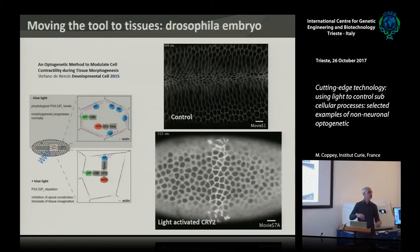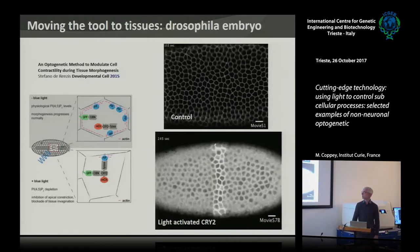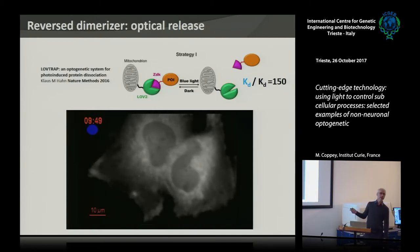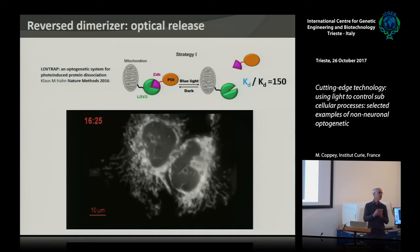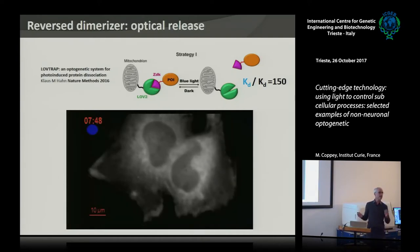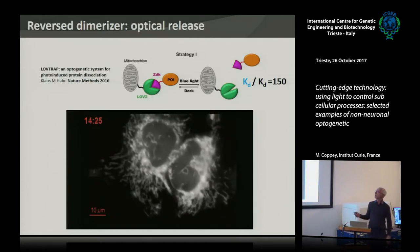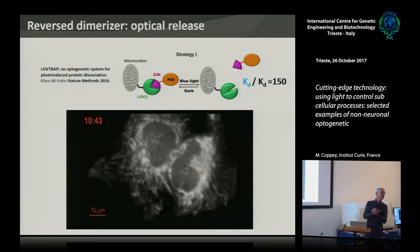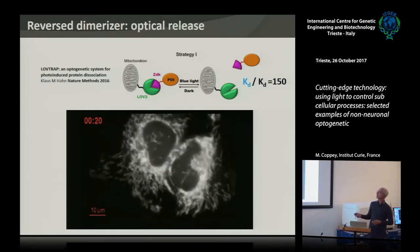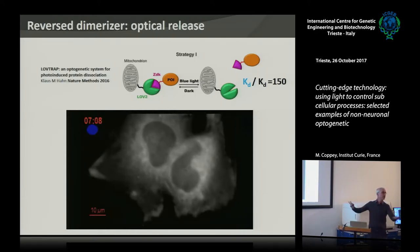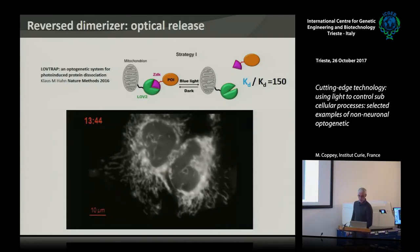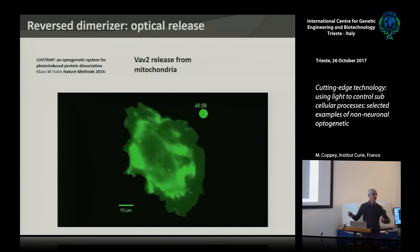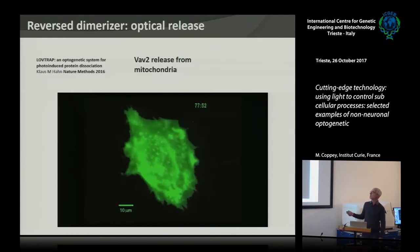Another recent development is the reverse ZDK system, where shining light causes dissociation of the dimer rather than association. This is a very important way to release a protein into the cytosol at a very precise moment. You can use the mitochondrial membrane as a storage place: the protein is sequestered on mitochondria, and when you shine light, it dissociates and is released everywhere inside the cell — giving very precise temporal control. One example is the release of VAV2, a GEF involved in CDC42 and RAC1 plus anti-protrusive activity. And this approach is also widely used for very tight control of gene expression.